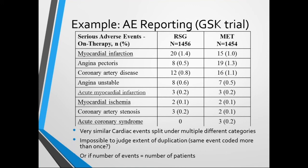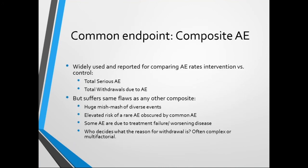It was impossible for us to judge whether the top category of myocardial infarction is the same as the one five rows down that says acute myocardial infarction, acute coronary syndrome, or myocardial ischemia. It makes it impossible to judge whether the same event was coded more than once, even when counting the number of events against the number of patients. That is the major challenge for systematic reviewers in working out which adverse events are of interest and which ones they should data extract and report on.